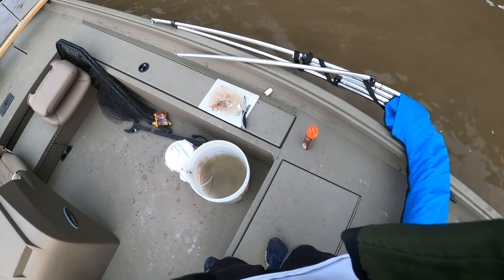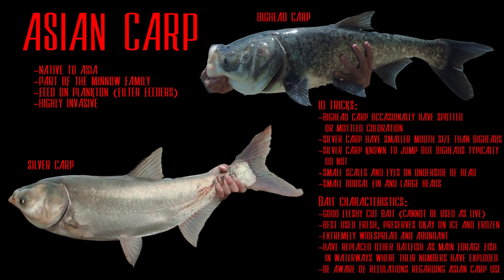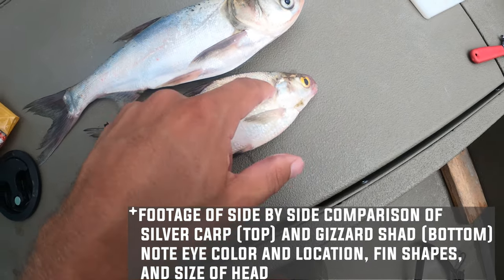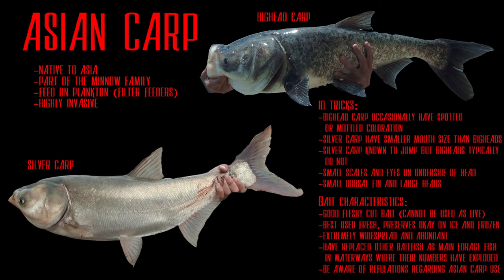Asian carp refers to two different fish: the silver carp and the bighead carp. These are easily confused with shad, but one way to identify them is by the eyes, which are positioned on the underside of their head. They have really small scales and big mouths — the bighead carp has a slightly bigger mouth than silver carp, but both have much bigger mouths than shad. These are invasive fish. Some people are skeptical about them as bait, but I think they do catch good fish. They don't preserve as well as other species, but they've produced some nice catches for me.